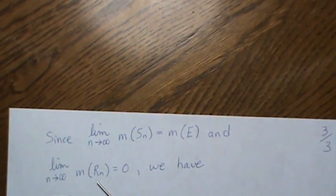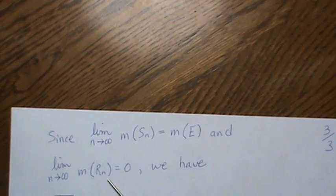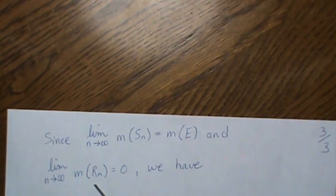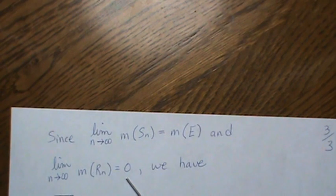And the limit of this R_N, which I'm going to call residual, the piece that gets smaller and smaller and goes to the empty set. So the measure of that goes to zero.